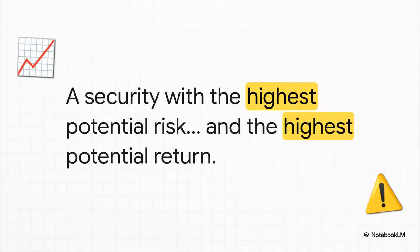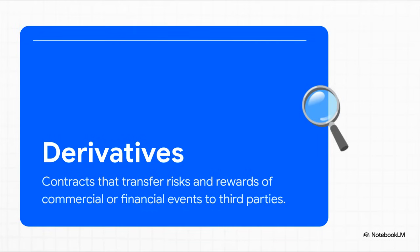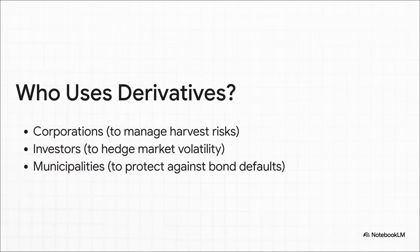Our last tool is a big one. This is a type of security that has some of the highest potential risk out there, but also some of the highest potential for reward — the definition of a double-edged sword in finance. We're talking about derivatives. At their very core, derivatives are simply contracts — agreements designed to pass risk and potential reward from one person to another; basically a way of making a bet on what's going to happen in the future. A farmer could use a derivative to lock in a price for their crops; an investor might use one to protect their portfolio if they think the market's about to dip; even a city could use one to insure its bonds. They're incredibly powerful tools for handling uncertainty.